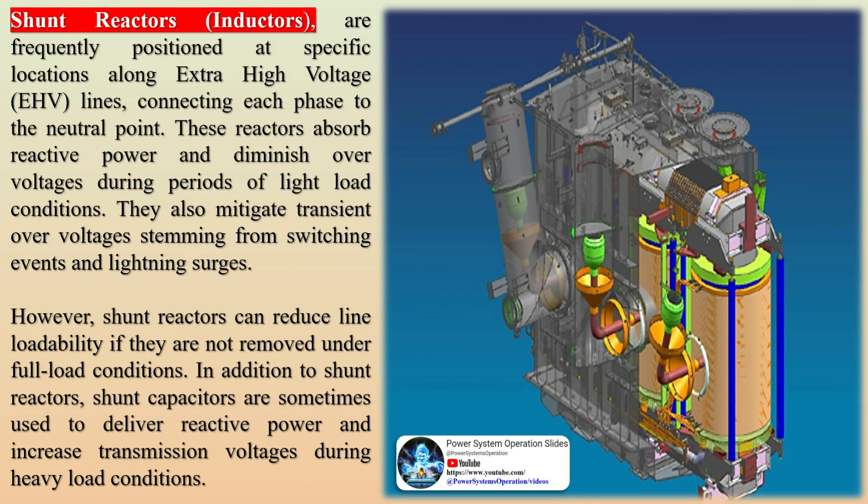These reactors absorb reactive power and diminish over-voltages during periods of light load conditions. They also mitigate transient over-voltages stemming from switching events and lightning surges. However, shunt reactors can reduce line loadability if they are not removed under full load conditions.